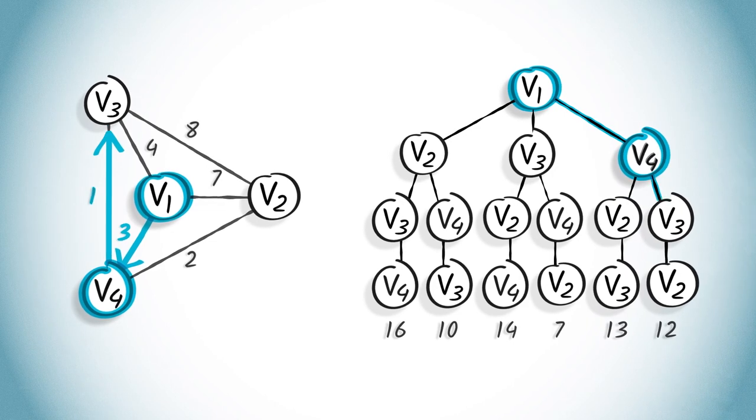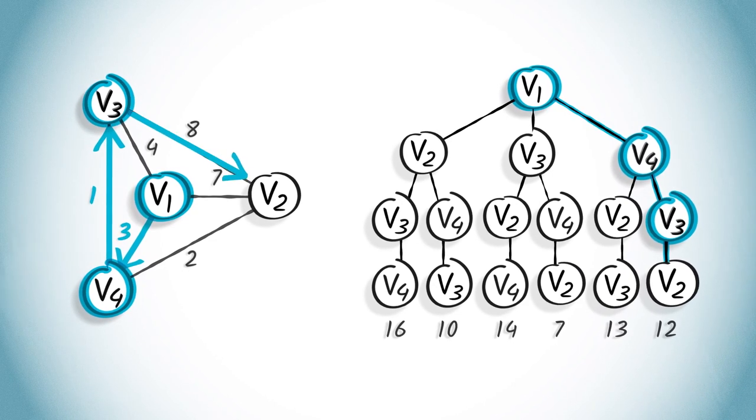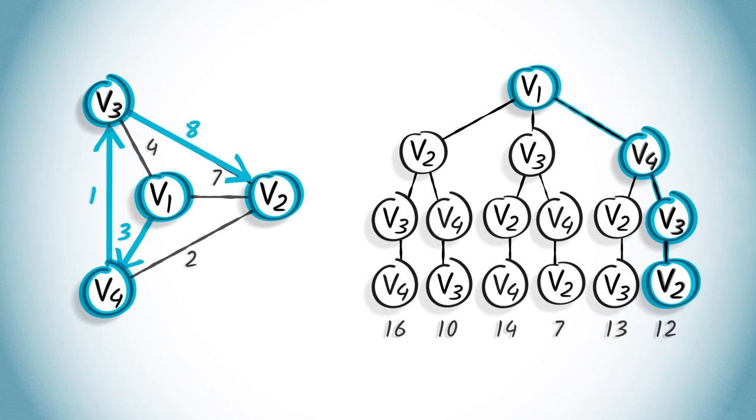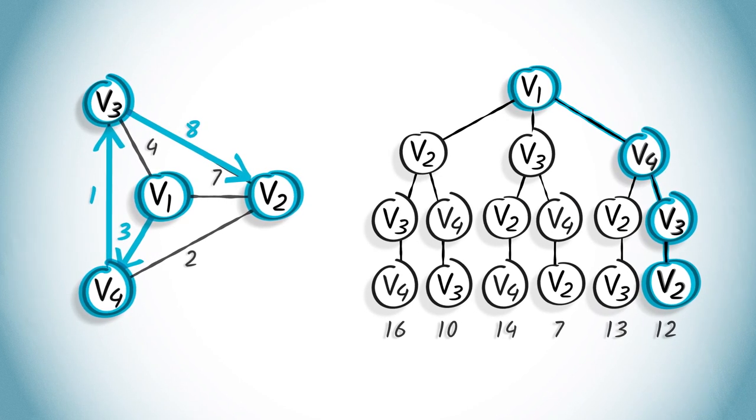Using the same principle, we then move to V3 and finally to V2. In this example, the obtained path has a total length of 12.